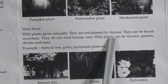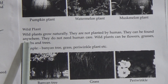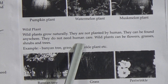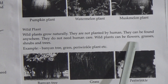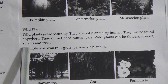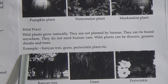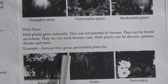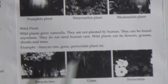Now we will read about wild plants. Wild plants grow naturally — they are not planted by humans. They can be found anywhere and do not need human care. Wild plants can be flowers, grasses, shrubs, and trees. Examples: banyan tree, grass, periwinkle plants, etc.